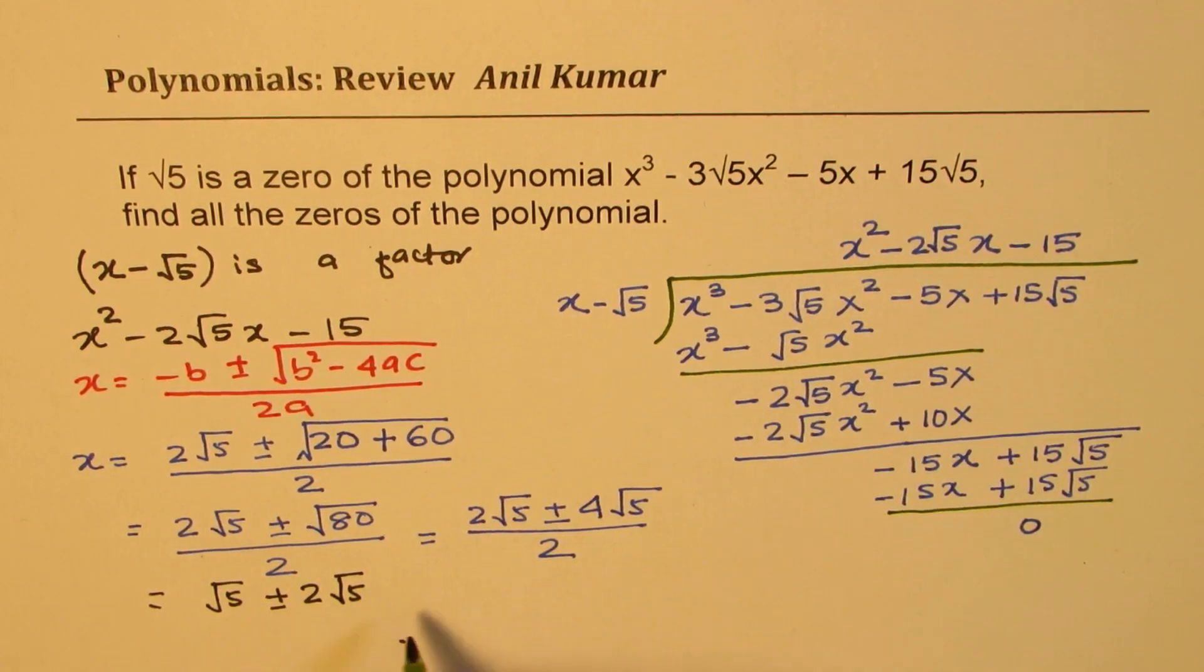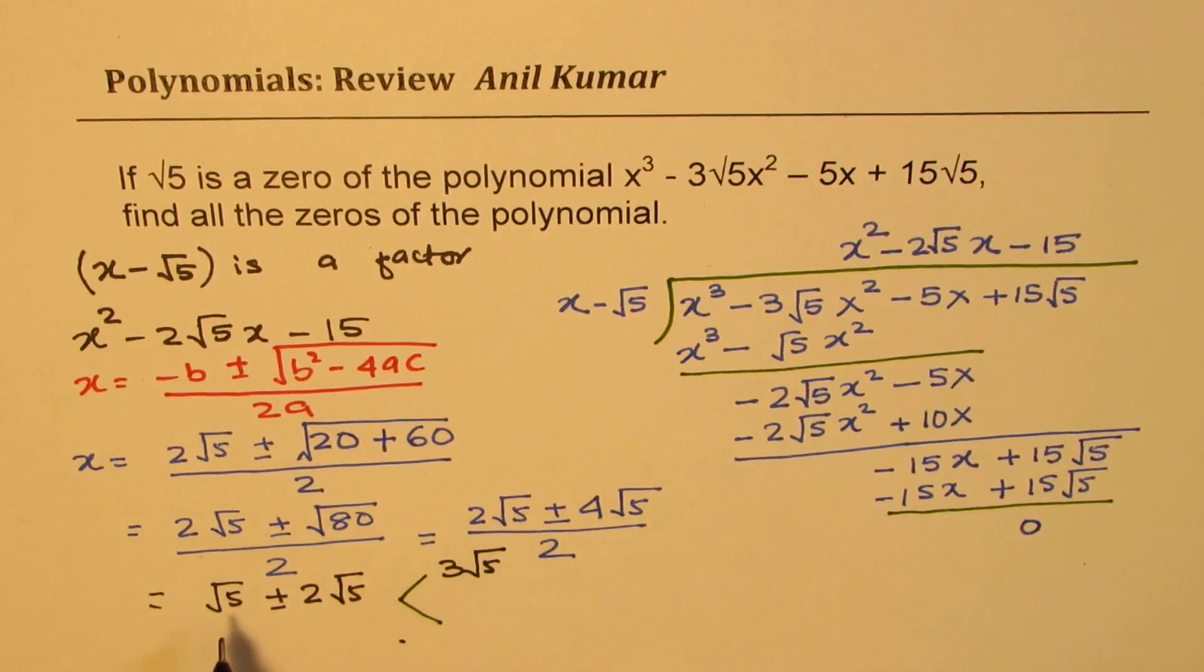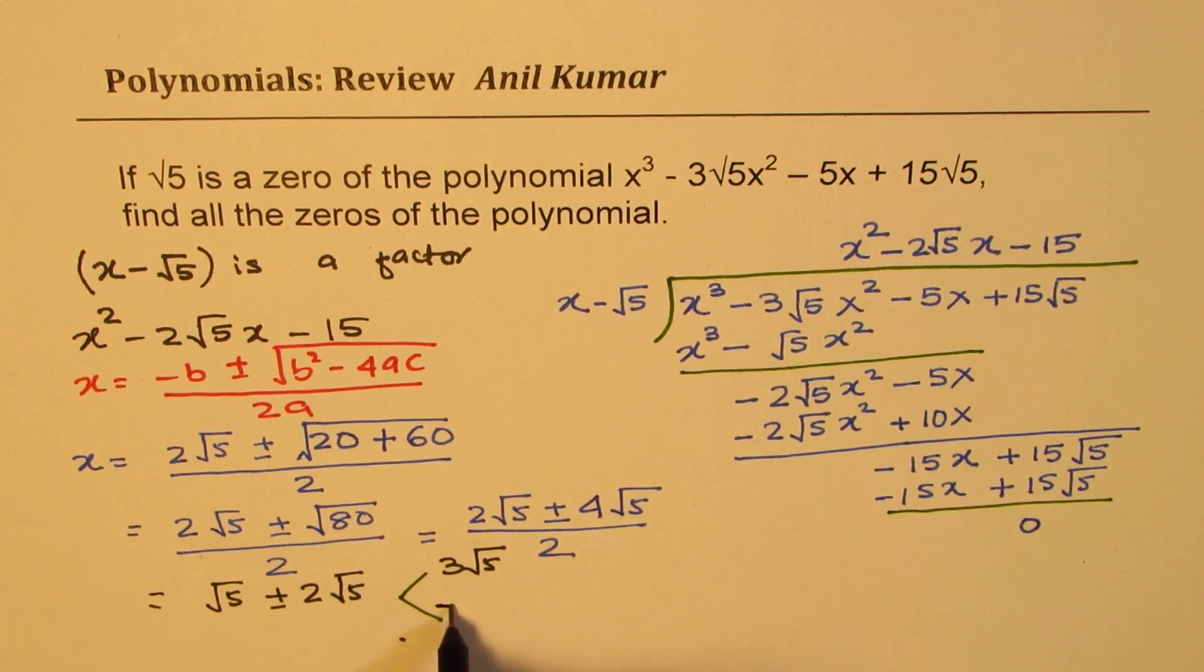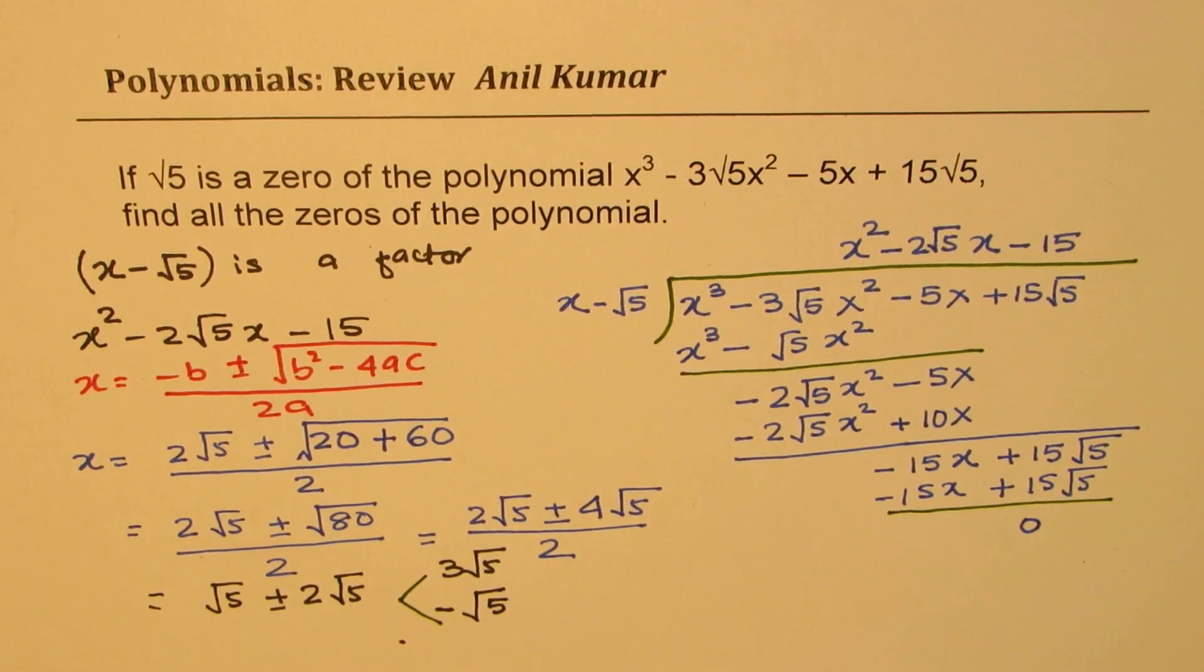So that gives you 2 solutions. Square root 5 plus 2 square root 5 gives us 3 square root 5. And square root 5 minus 2 square root 5 gives us minus square root 5. So these are the other 2 roots.